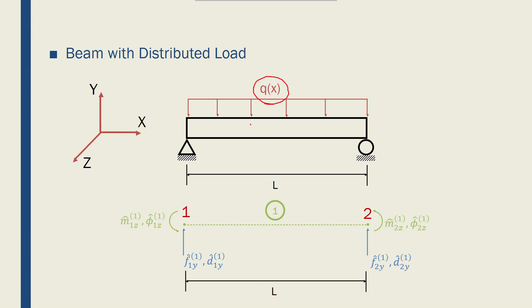We can discretize this beam element into one element with two nodes, node 1 and node 2. And each node, just like before, will have its own moments, rotations, forces and displacements. Let's assume that the length of this beam element is L.